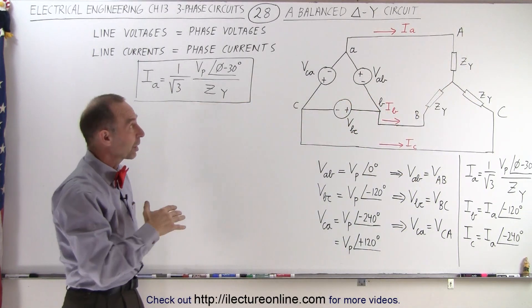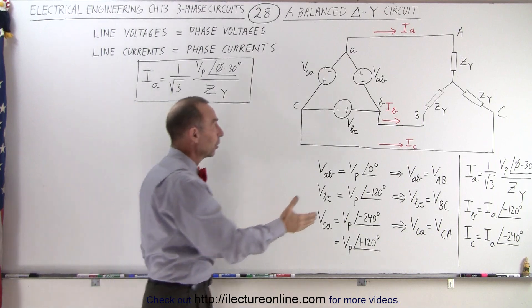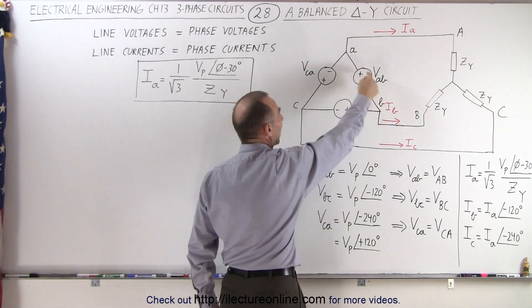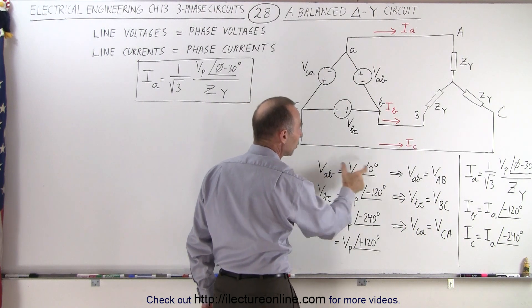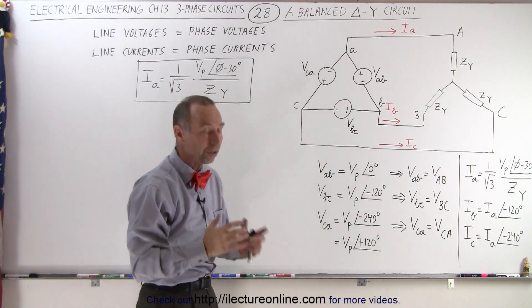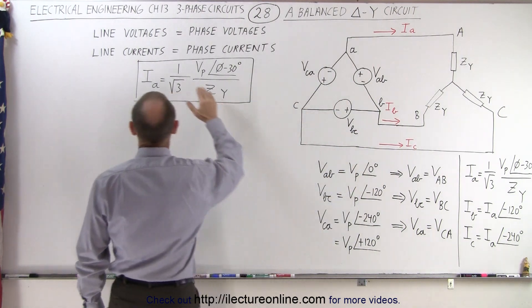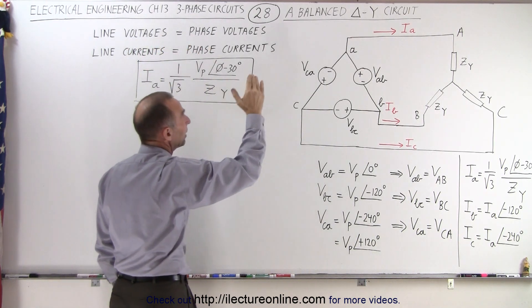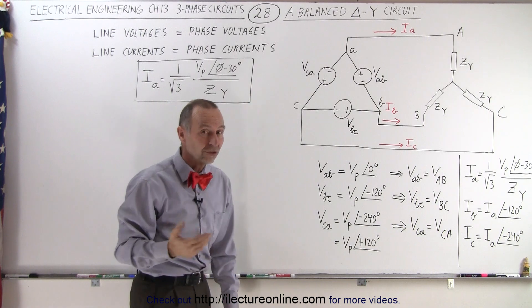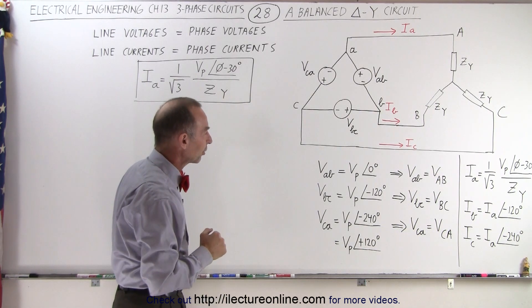Notice that just like before when we talk about the delta-delta circuit, on the source side, when we have a delta formation, we know that the phase voltage must equal the line voltage. There's no difference between them. As a matter of fact, notice we have it here, line voltage is equal to phase voltage in a delta-Y circuit, just as it is in a delta-delta circuit.